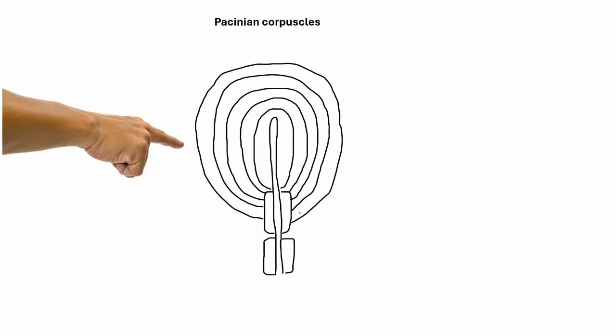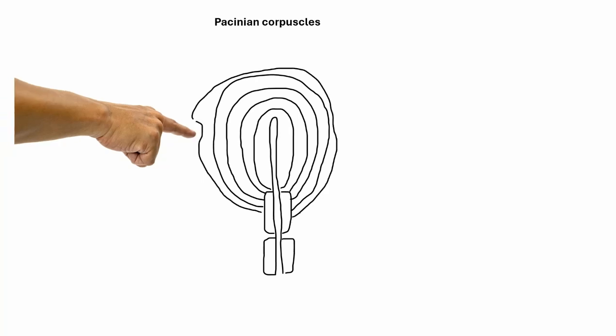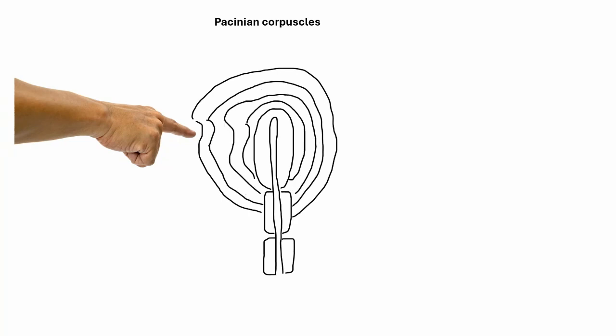Let's look at how these Pacinian corpuscles actually work, and how they can detect touch. Upon touch to the skin, the connective tissue or lamellae become indented or deformed. Eventually, this leads to a vibration within the end of the sensory neuron.